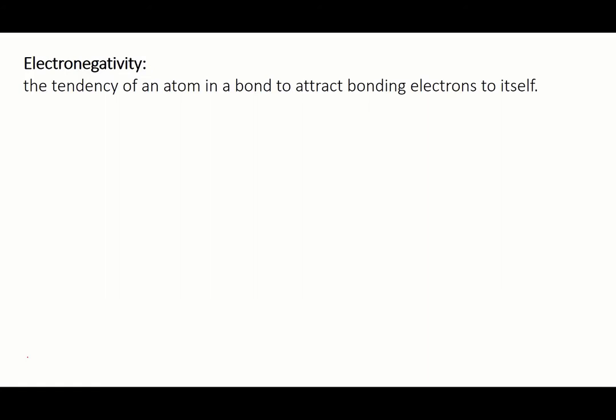While we can talk about the electronegativity of an individual type of atom, this property really only manifests when an atom is bonded to other atoms. It cannot be measured directly, but it's calculated from other atomic and molecular properties.